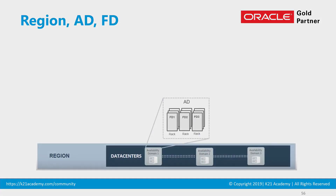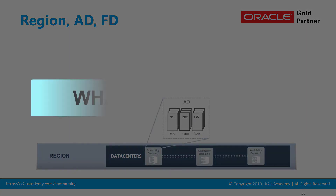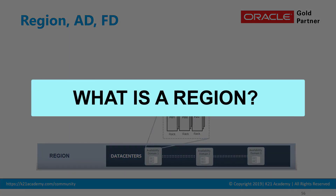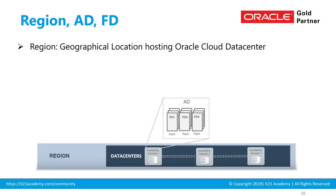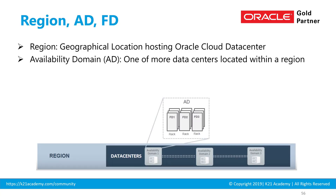So first, let's look at what a region is. A region is a geographical location hosting the Oracle Cloud data center, and within that region you can have up to three availability domains.